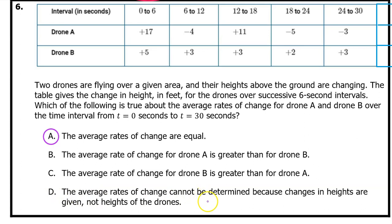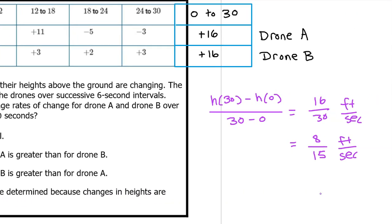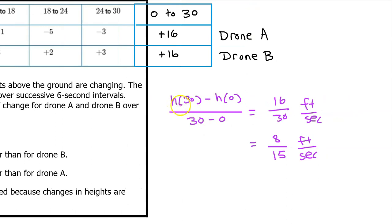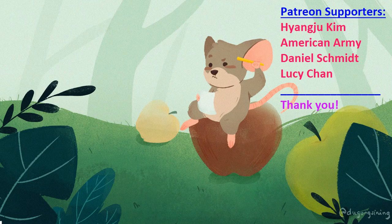Don't be fooled by option D — many students think we can't calculate the average rates of change because we aren't given the actual heights, only the changes in heights. But we can still calculate it because h(30) minus h(0) is the change in height from 0 to 30, which we do know. Don't forget to like and subscribe — click the upper link for the whole unit playlist or the lower link for the next video.